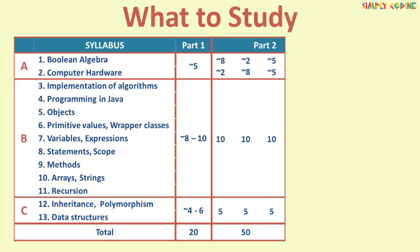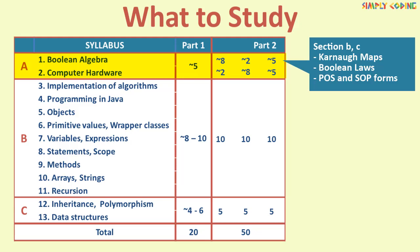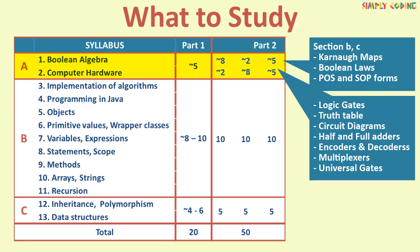Now, what to study and in what sequence? I would suggest starting with this section A first. It has 25 marks and has some quick wins which will surely get you marks. In Boolean algebra, start with section B and C first which covers majority of the marks. This will cover K maps, SOP and POS forms, Boolean laws etc.